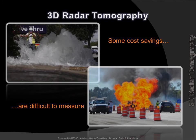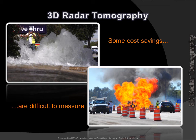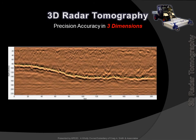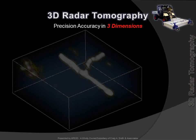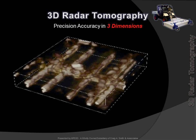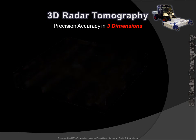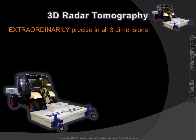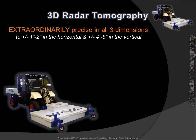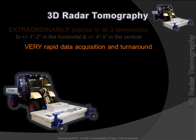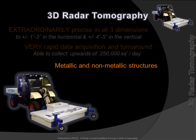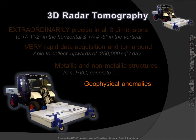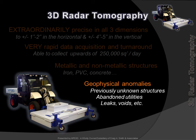Some costs are difficult to measure. Near photographic resolution capabilities. Extraordinary precision in three dimensions: 1-inch to 2-inch horizontally, 4-inch to 5-inch vertically. Rapid acquisition and turnaround — large areas imaged in a day. Conductive and non-conductive facilities: ductile iron, PVC, concrete. Geophysical anomalies, unknown structures, abandoned facilities, and voids.